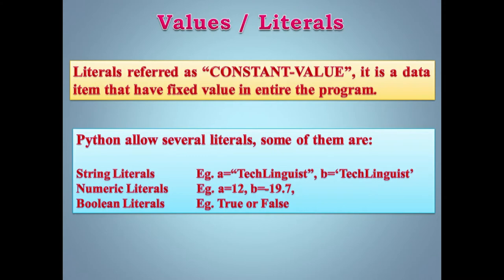Kitne types ke literals hote hain jo Python allow karta hai: String literal — example: a = 'Tech Linguist'. String ko double inverted commas ya single inverted commas mein likh sakte hain, dono treat hote hain as a string. Numeric literals — example: a = 12, b = -17.9. Koi bhi positive number, negative number, decimal number — they are called numeric literals.